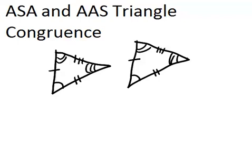That can be a lot of work, and so there are a few shortcuts to show that two triangles are congruent without having to show all of that information. Two of them that we're going to talk about here are ASA and AAS.